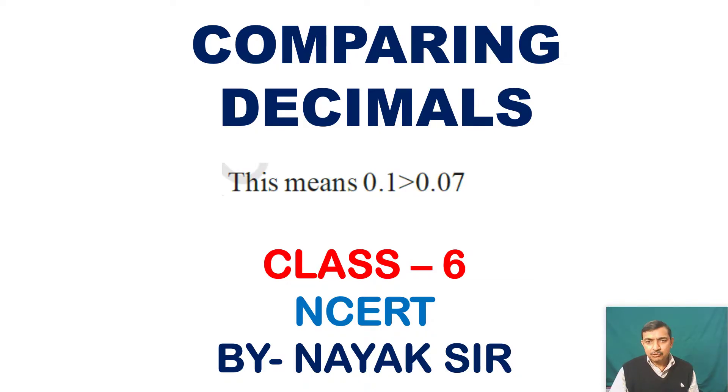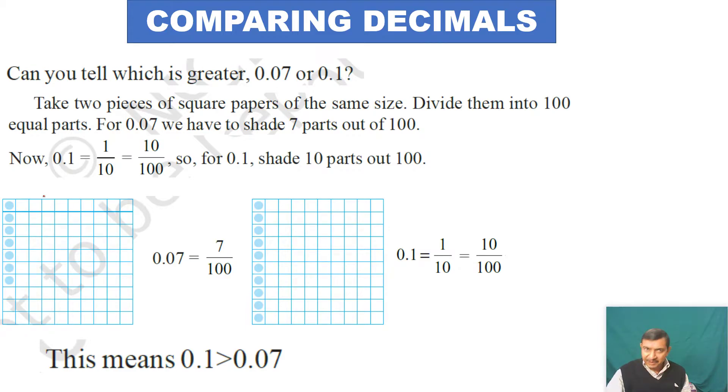There are two numbers on this screen. Let's discuss why 0.1 is greater than 0.07. When you compare decimal numbers, can you tell which is greater: 0.07 or 0.1?